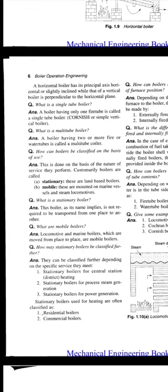How can boilers be classified on the basis of use? This is done on the basis of the nature of the service they perform. Customarily, boilers are called stationary and mobile. Stationary boilers are land-based boilers. Mobile boilers are mounted on marine vessels and steam locomotives.